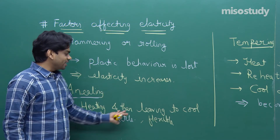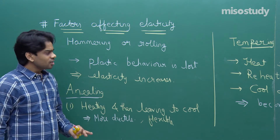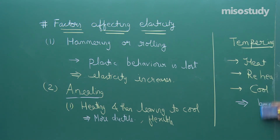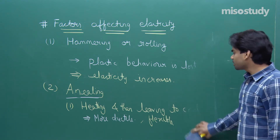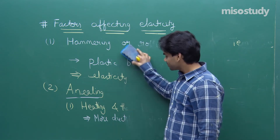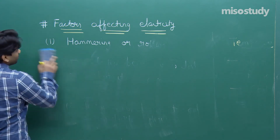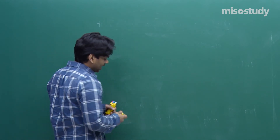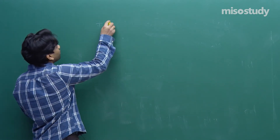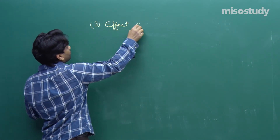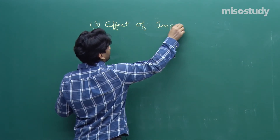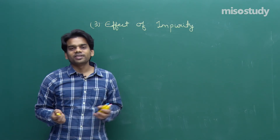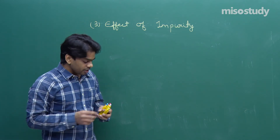When you heat to very high temperature and leave to cool, you get a more ductile and flexible metal. When you heat to high temperature, cool, then reheat to a lower temperature, the metal becomes tough and elastic. The third factor is the effect of impurity. Sometimes impurities can increase the elasticity and sometimes they can decrease it, so we cannot say definitively whether elasticity will increase or decrease.